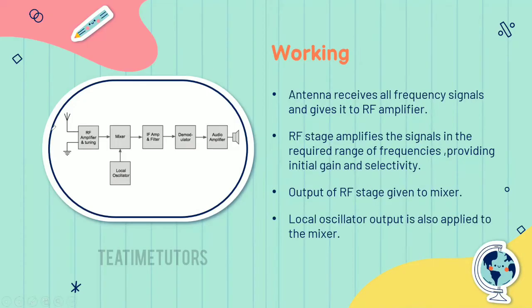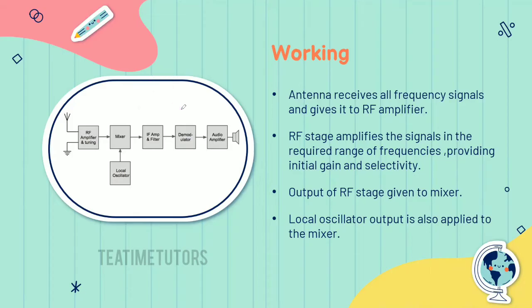Next, one of the blocks. First, the antenna is the starting process. The antenna receives all range of frequencies. You can receive all range of frequencies. This is a low amplitude signal. The input signal will produce a larger output signal. That's why this RF amplifier works.